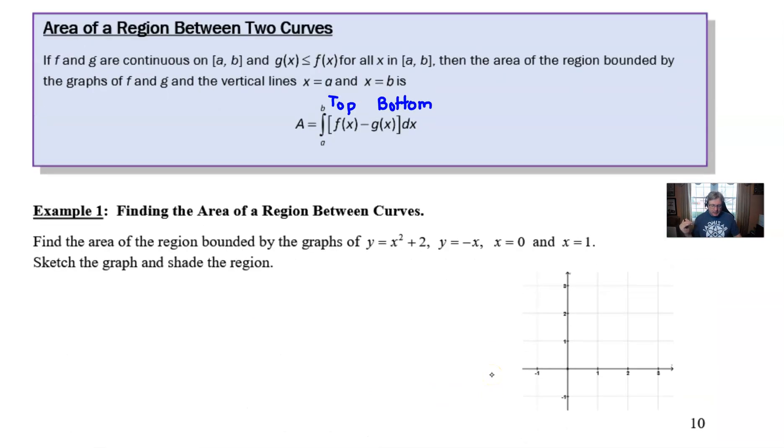Let's go ahead and take a look at our one example here. It's going to ask us to find the area of the region bounded by the graphs of y = x² + 2, y = -x, x = 0, and x = 1. Interesting, there's four different graphs there. Find the area, and we're going to sketch the graph and shade the region. There's a big reason for that. I think it's really important that you start to get this visual.